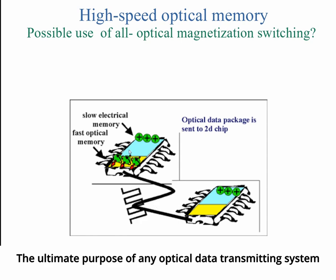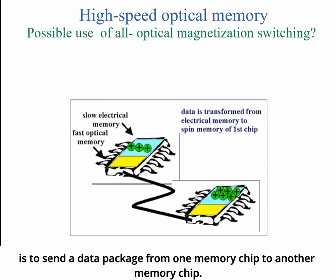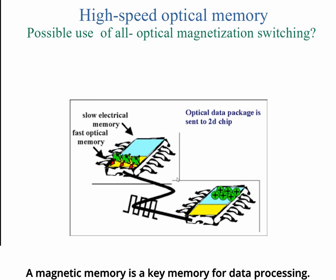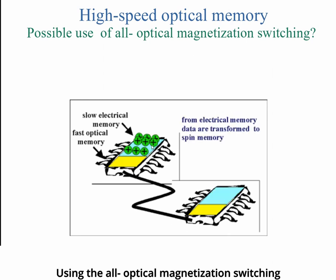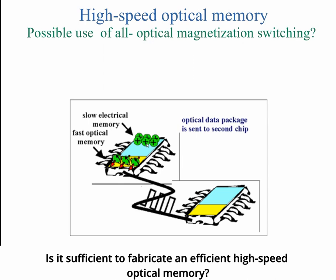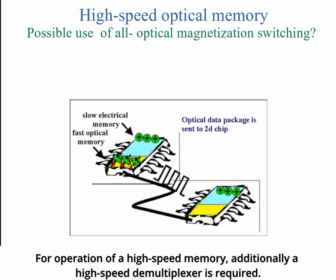The ultimate purpose of any optical data transmitting system is to send a data package from one memory chip to another. The larger the amount of data that can be sent in the shortest time interval, the better. Magnetic memory is a key memory for data processing. Using all-optical magnetization switching, it is possible to record data into magnetic memory via a short optical pulse. However, this alone is not sufficient for an efficient high-speed memory — additionally, a high-speed demultiplexer is required.